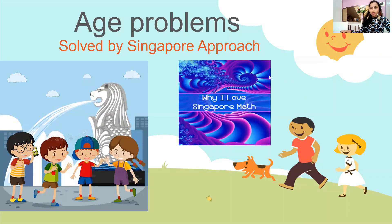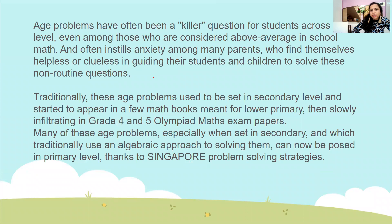Hi everyone. Today we are again here to learn age problems and we will be using the Singapore approach to solve the problem, where there will be no algebra and we can solve the problem in seconds. Earlier when I was teaching students, we were only using algebra to solve age problem questions. It involved ratio and only algebra. But nowadays grade four and five Olympiad math exam papers also have age problems involving ratio, which involve algebra but children don't know it. So easily we can use the Singapore approach to solve this. Let's see how.